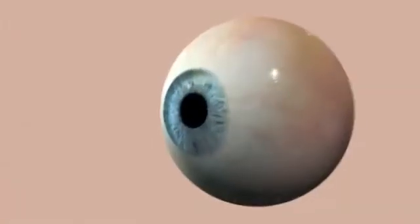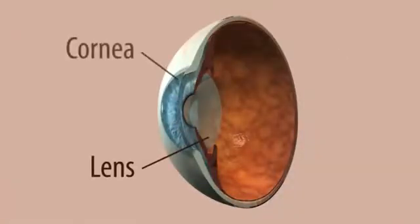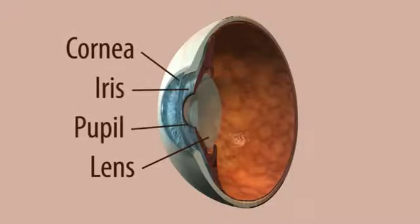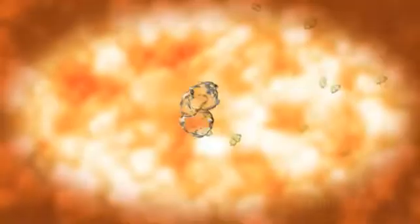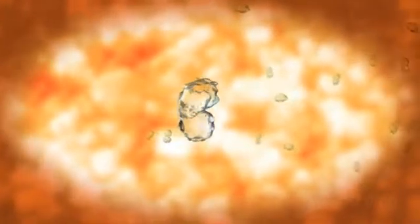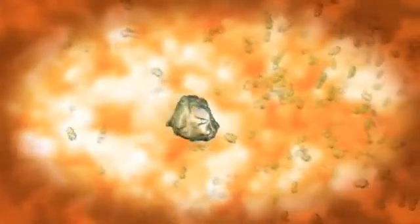A cataract is the clouding of the eye's natural lens, a structure which is positioned behind the cornea, iris, and pupil. Like the glass lens of a camera, our lens adjusts to focus our vision. The lens is mostly made up of water and protein. As we age, these proteins change and may begin to clump together, obscuring portions of the lens.